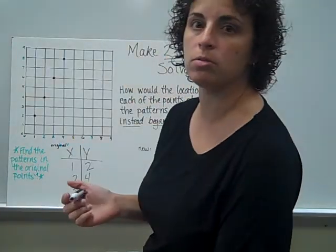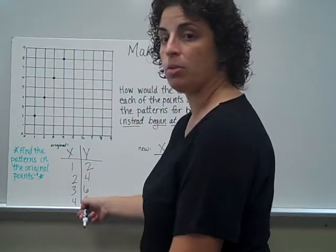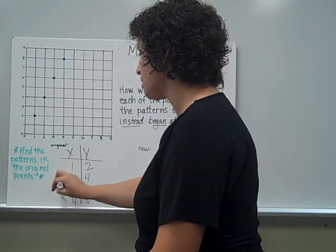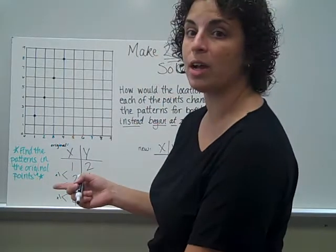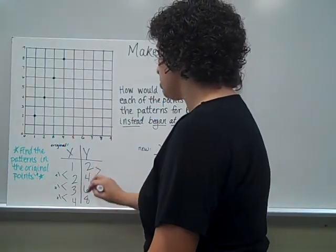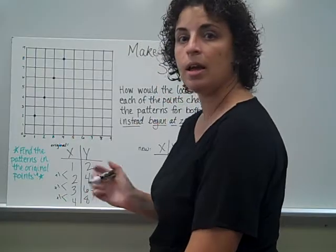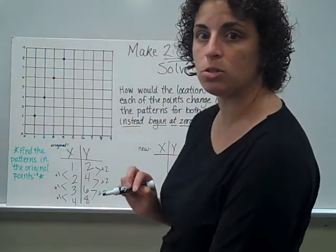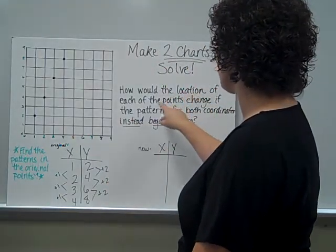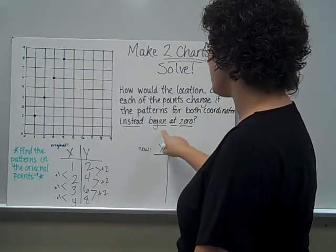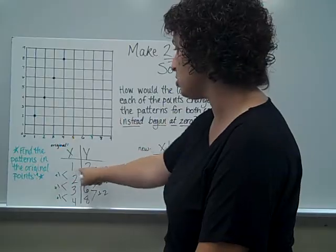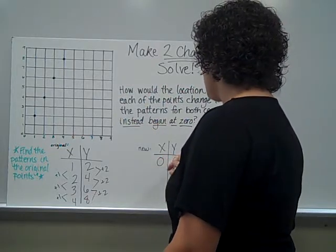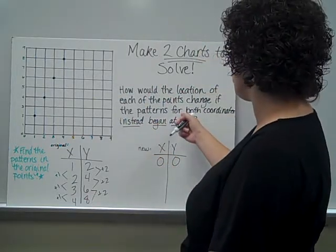It says find the patterns in the original points. I'm looking at just x-coordinates first. How does 1 change to 2, 2 change to 3, and 3 change to 4? That's by adding 1 each time. So my rule for x is add 1. Looking at my y's: 2 changes to 4, 4 to 6, 6 to 8 — that's plus 2. So my rule for y-coordinates is plus 2. But did these patterns begin at 0? No, they began at 1 and 2. So the change is coming at the beginning — they are going to begin at 0 for both coordinates.